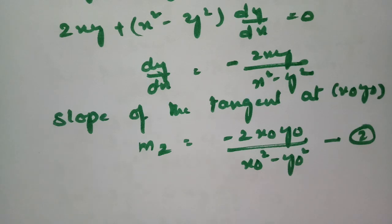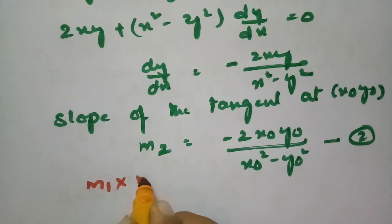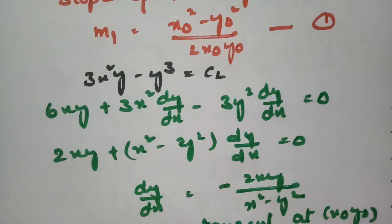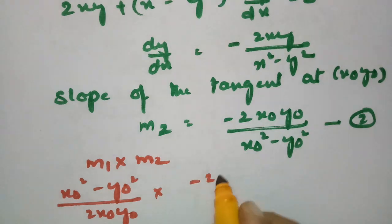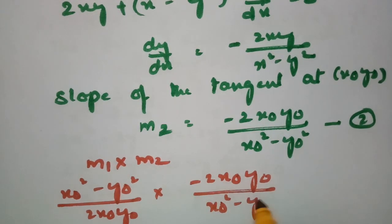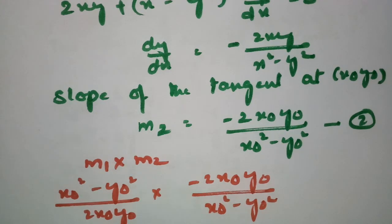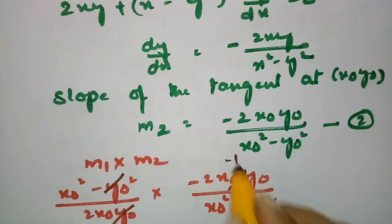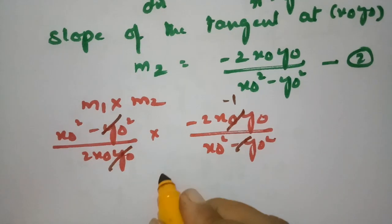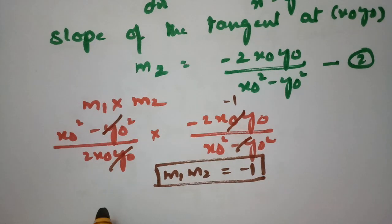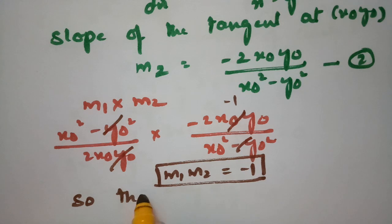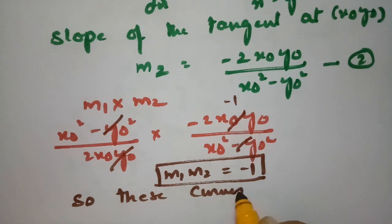To show the curves are orthogonal, we compute the product of the slopes: m1 × m2 = [(x₀² - y₀²) / (2x₀y₀)] × [-2x₀y₀ / (x₀² - y₀²)]. The numerator and denominator cancel, giving m1 × m2 = -1. Since the product of slopes is -1, these curves intersect orthogonally.